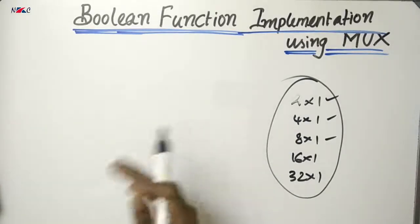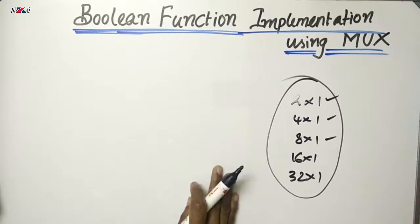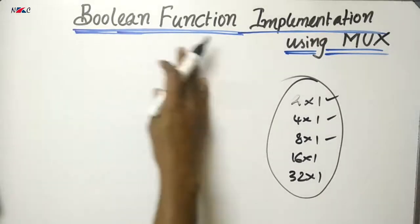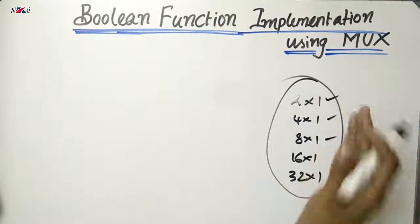That means we can reduce the number of components, cost, and complexity. So we are looking at the topic: boolean function implementation using multiplexers.